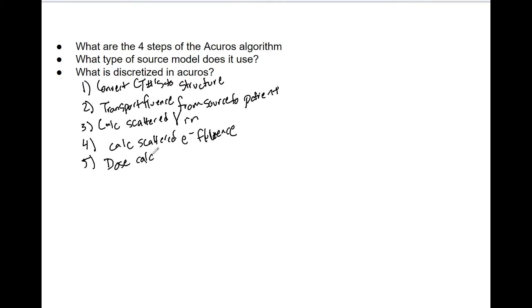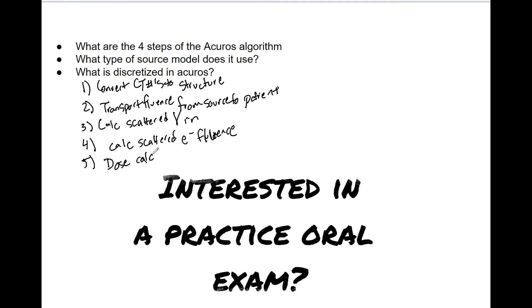So remember that ACUROS is four or three or four times faster than AAA because steps two to five are done once per global calc. So that makes it much faster, especially in those instances like SBRT lungs or where there's a lot of heterogeneity. ACUROS is much faster and proven to be more accurate than AAA as well.